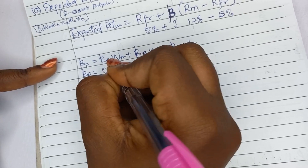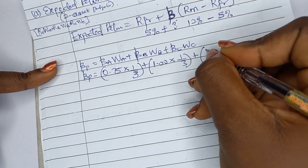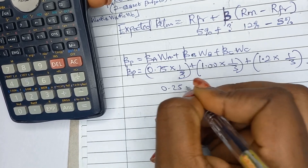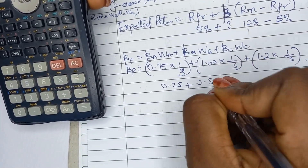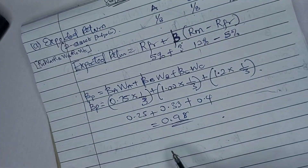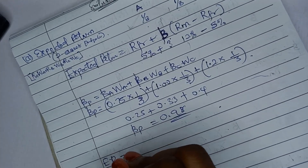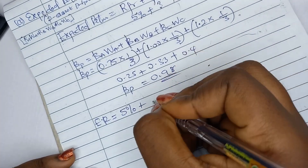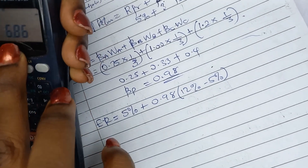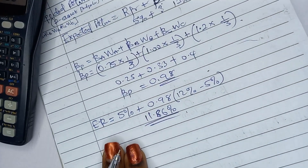Calculating the portfolio beta: 0.75 times 1/3 equals 0.25, plus 1.00 times 1/3 equals 0.33, plus 1.2 times 1/3 equals 0.40. Adding these together gives a portfolio beta of 0.98. Now using this in the CAPM formula: expected return equals 5% plus 0.98 times (12% minus 5%), which is 7% times 0.98, giving 6.86%, plus 5% equals 11.86%.